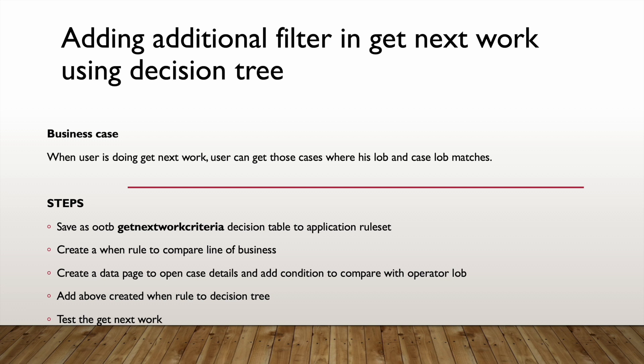When we want to add more filter conditions to Get Next Work criteria, we have two main options. First, we can add more filter conditions directly in the Get Next Work list view. Second, we can add more filters in the decision tree. Let's say you get 100 cases based on the Get Next Work list view conditions — Pega then applies the decision tree as an additional filter on those 100 cases.